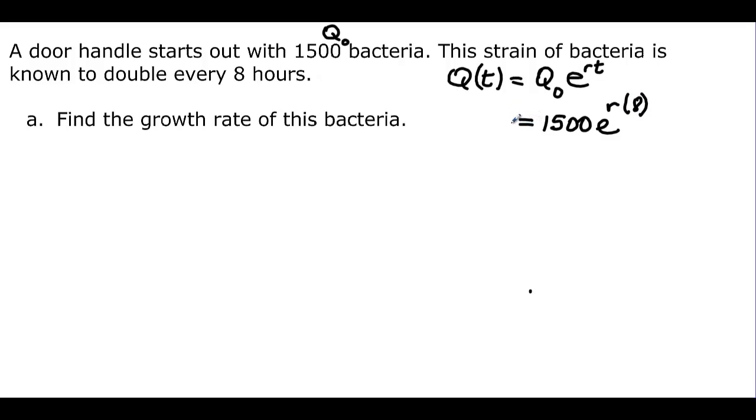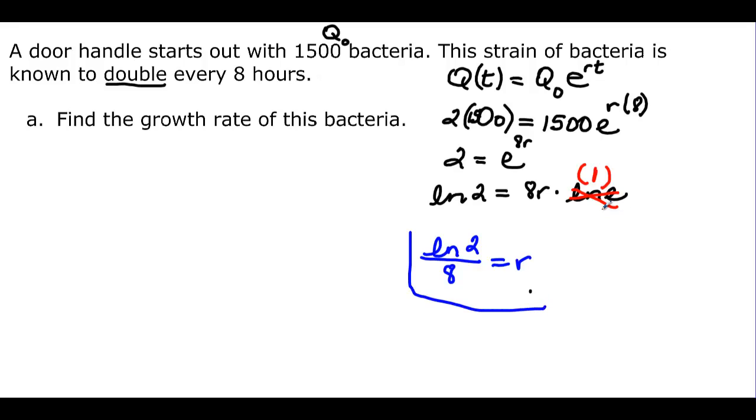And all we need over here then is the idea that it doubled. So I have twice my Q₀, which is 1500. So when I divide off the 1500, I'm going to have 2 is equal to e to the 8r. And we just have to take the natural log of both sides, and bring the exponent down times my natural log of my base. And if you remember, we said that this was really just like multiplying times 1. So my final answer here then should be ln 2 divided by 8 is equal to my rate. And that's good enough. I don't really care exactly what it is, I just need a representation of that rate.